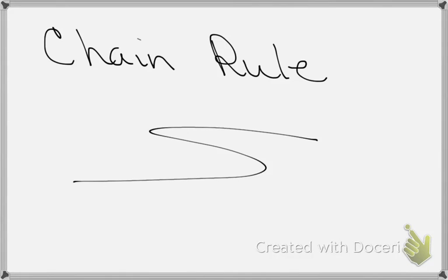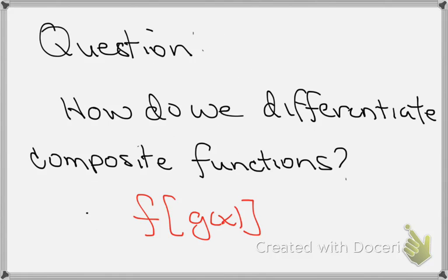In this video I want to talk to you about the chain rule. The question is how do we differentiate composite functions, which are functions that look like f of g of x, or one function stuck inside of another.